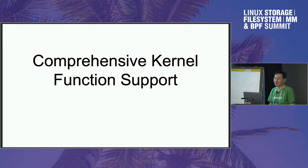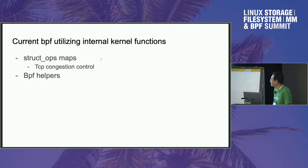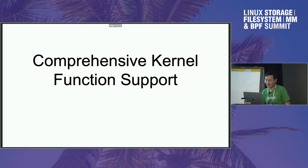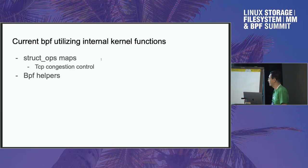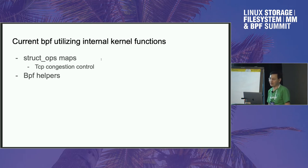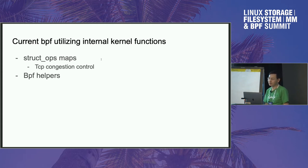The first topic is trying to have comprehensive kernel function support in BPF. Currently, we try to utilize some kernel internal functions — for example, you can use struct ops to call some congestion control functions in the kernel. The most popular use case is BPF helpers, and inside helpers you can call kernel functions, but you cannot create a helper for every function — that's just not scalable.